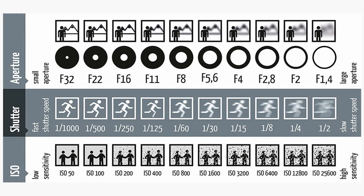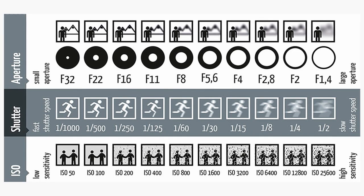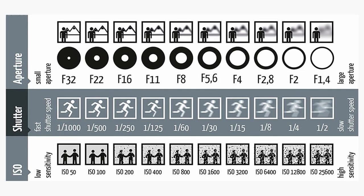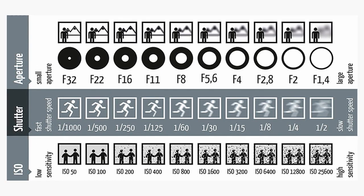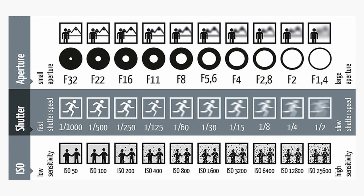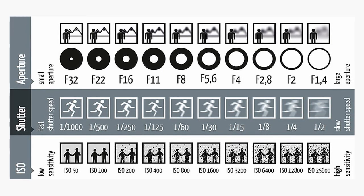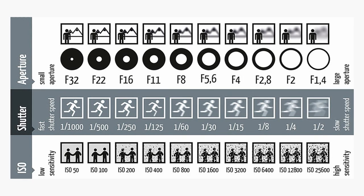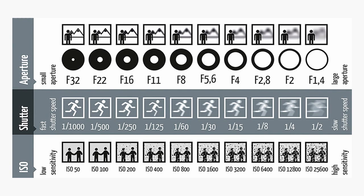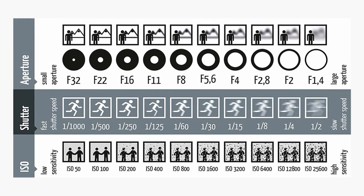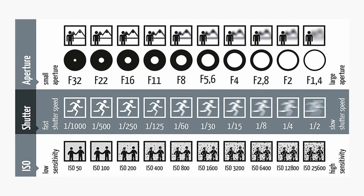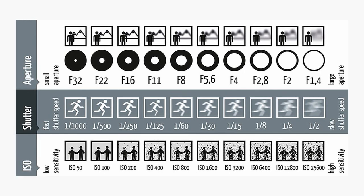First, we'll start with aperture. On the left, we've got F32 — that's our F-stop. The circle represents the iris, and it's closed down at F32, so it's not letting a lot of light in. In the image above you can see the effect: everything's in focus. If we go to the other end, we have a large aperture at F1.4, letting more light in. You'll notice the subject — the little man — is in focus and the background is out of focus.